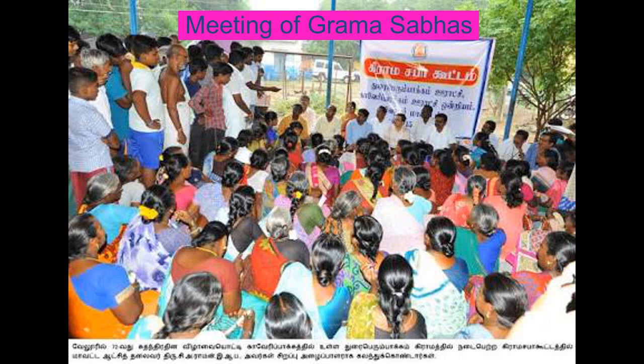The Grama Sabha meets four times a year: January 26th (Republic Day), May 1st (Labour Day), August 15th (Independence Day), and October 2nd. In these meetings, they discuss the beneficiaries of schemes and the income and expenditure of the Grama Sabha.